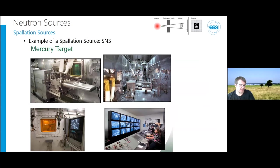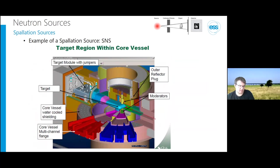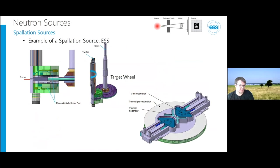Shown here is the SNS spallation target in Oak Ridge — a liquid mercury target that's pumped around to deal with the heat load when the proton beam hits it. At ESS the concept is similar but different: we use a solid tungsten wheel rotating to deal with the heat load. The moderator at ESS is called the pancake moderator because of its shape, optimized over at least a decade with extensive computer simulations — that's where all the neutrons at ESS will come from.